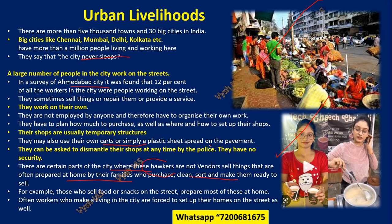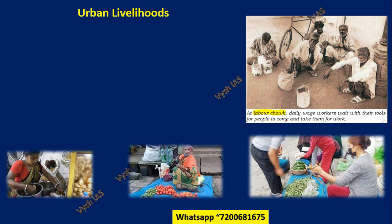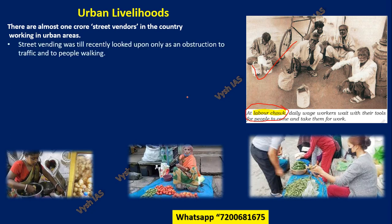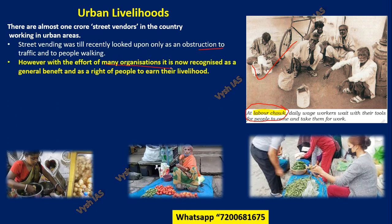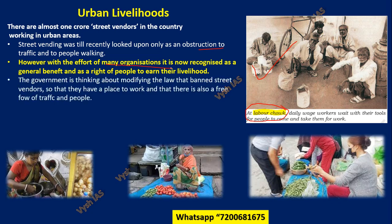Some vendors are forced to sleep on the street itself, paying something to the corporation, which is dangerous for them. In these cities you will also see an area called a Labor Chowk — this is an NCERT picture — where daily wage workers wait with their tools, ready to be picked up as painters, carpenters, or other workers, sometimes in bulk, sometimes individually. There are almost one crore street vendors working in urban areas in the country. Street vending was until recently looked upon only as an obstruction to traffic, but now the government and many organizations are recognizing it as a benefit, providing cheaper goods and the right to livelihood.